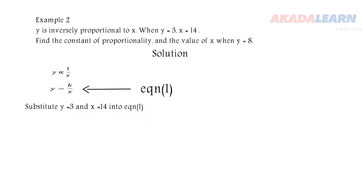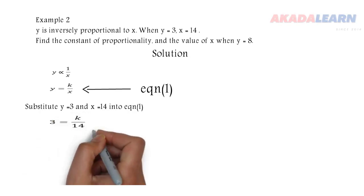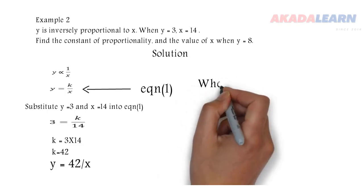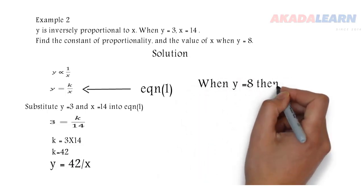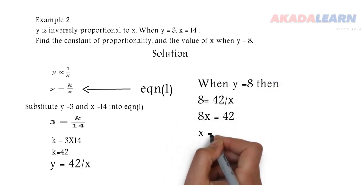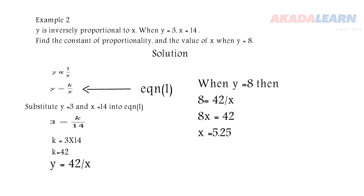Multiplying both sides by 14 to isolate k gives k equals 3 times 14, which is 42. We rewrite equation one as y equals 42 over x. When y is 8, we substitute back in: 8 equals 42 over x. Cross-multiplying gives 8x equals 42, and dividing both sides by 8 gives x equals 5.25. Please go over the video again to get yourself familiarized with this topic. Thank you.